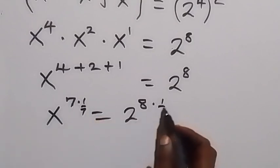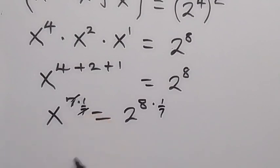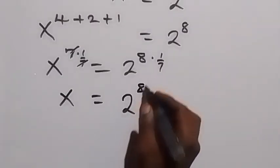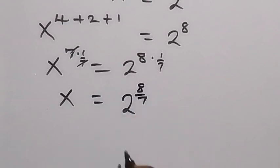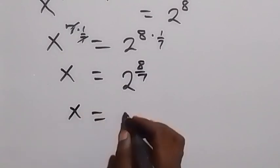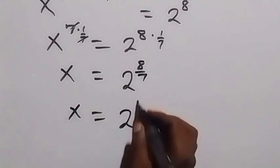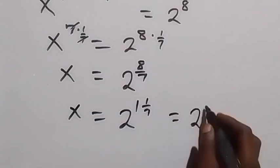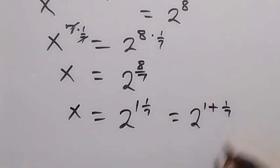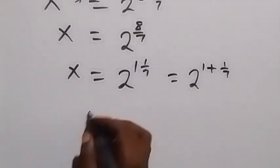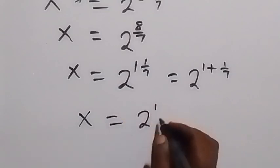We multiply through by 1 over 7. The 7 cancels on the left and we are left with x, which equals 2 raised to power 8 over 7. We can rewrite 8 over 7 as 1 plus 1 over 7, giving x equals 2 raised to power 1 plus 1 over 7. From the law of indices, we write this as 2 raised to power 1 times 2 raised to power 1 over 7.